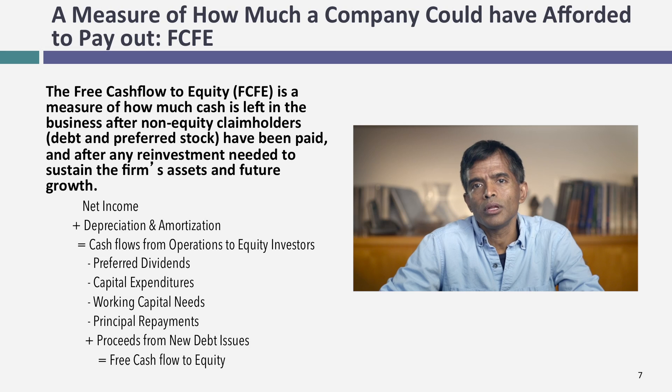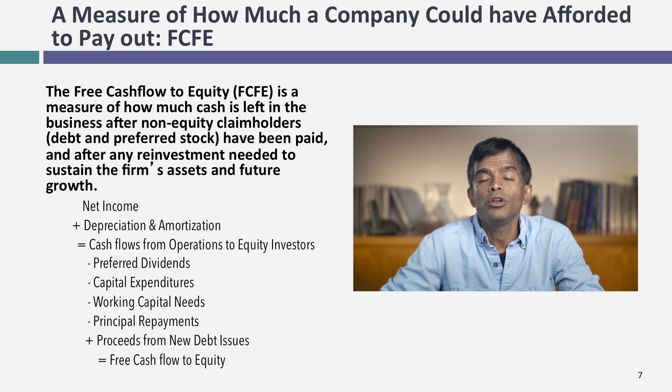When you do this for a company, you could end up with a negative free cash flow to equity. If you do, your dividend assessment just got very simple. A company with negative free cash flow to equity should really not be returning cash to its stockholders — because you're already in the hole, and the rule, if you're in a hole, is stop digging. So if free cash flow to equity is negative, don't pay dividends, don't buy back stock. If it's positive, that is what the company could have returned in that particular year, either as dividends or stock buybacks. That's how we come up with potential dividends.